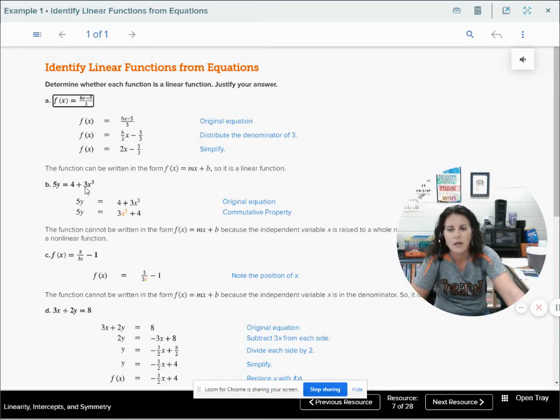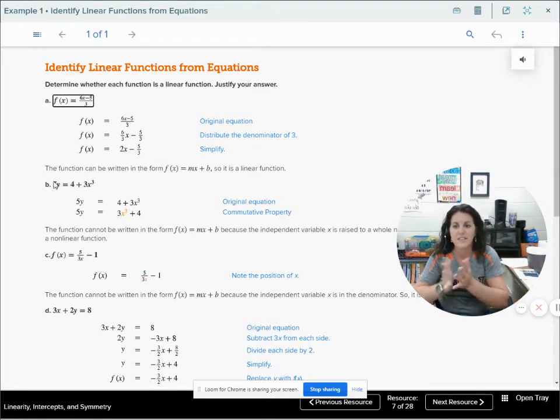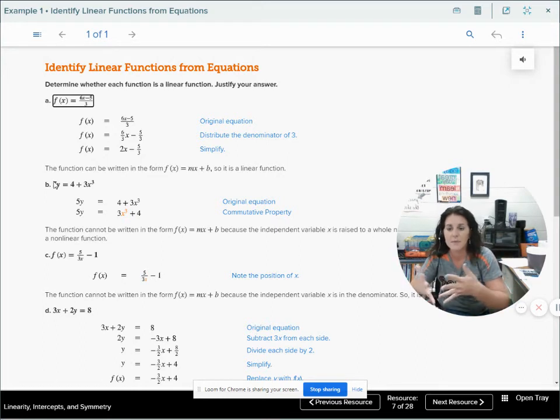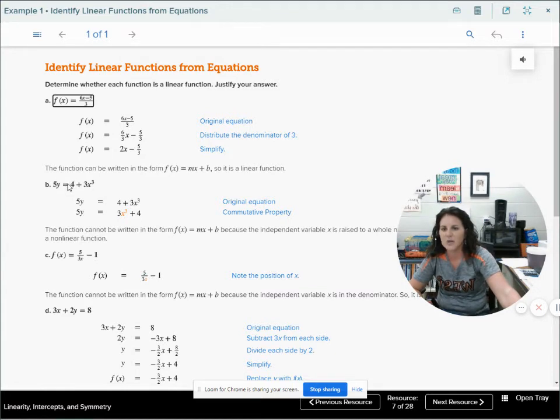Looking at letter B, I see that x cubed. So my first thought is no, it's not linear, it's going to be a nonlinear function. But we have to double check, because if there was an x cubed over here that I could subtract from both sides and simplify, then maybe it would go away. But we can see that even if I were to divide everything by 5 to get y by itself, that does not get rid of my x cubed. No matter what, I'm not getting rid of that x cubed, so it is a nonlinear function.